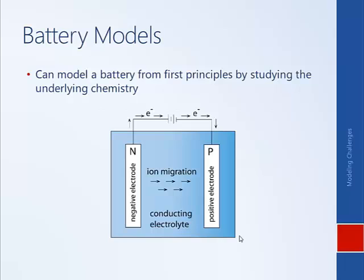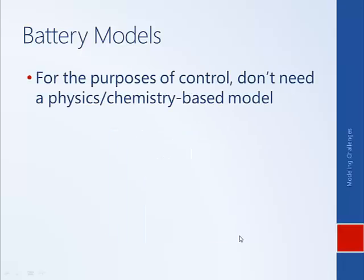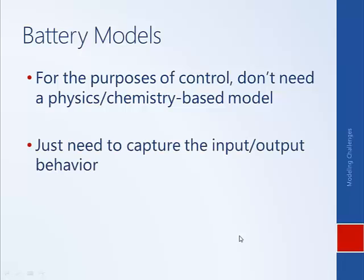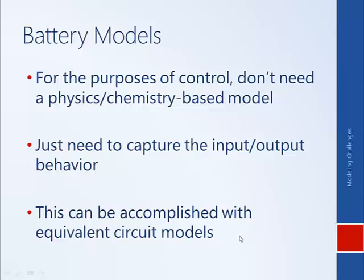One example where black box modeling is often used is with batteries. One approach for deriving the model of a battery is to examine the underlying chemistry of the battery, but this process can be quite challenging, especially for engineers who may not have the chemistry background. As engineers, for the purposes of control, we don't necessarily need a physics or chemistry-based model. We don't need to understand what's happening within the battery — we just want to capture the input-output behavior and know how the current being supplied by the battery will change under different conditions.